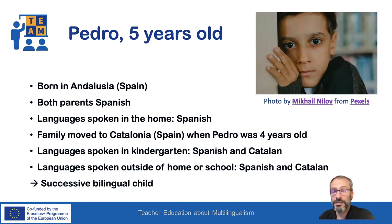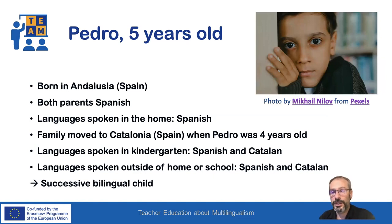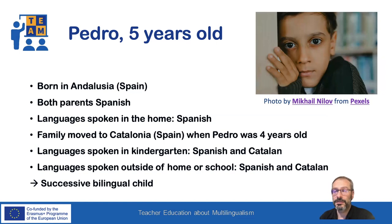Pedro is five years old. He was born in Andalusia to Spanish parents and grows up with Spanish in the home. The family moved to Catalonia when Pedro was four years old. In the kindergarten and outside of the home or school he speaks Spanish and Catalan. Pedro is a successive bilingual child.